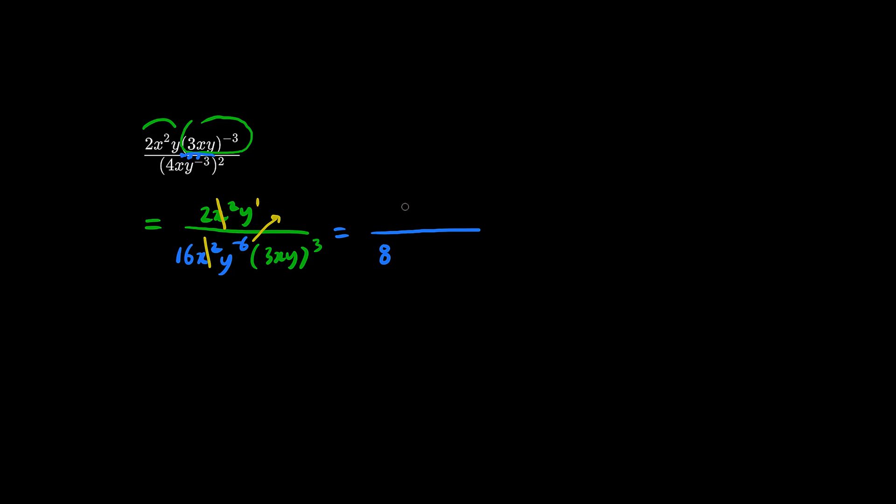y6 and y1 becomes y7. And we're going to spread the exponent love here. 3 cubed is 27. We have x cubed, y cubed.